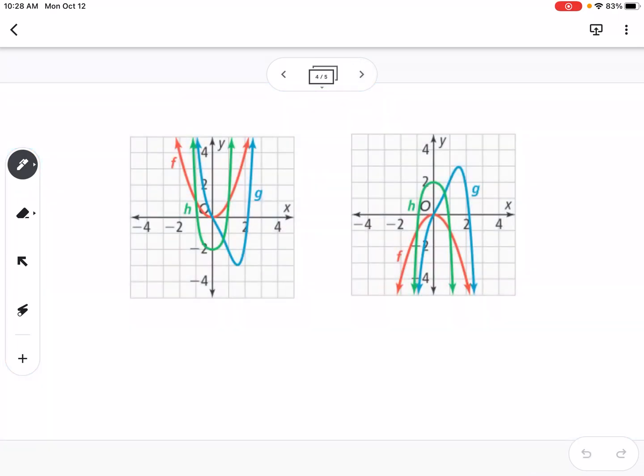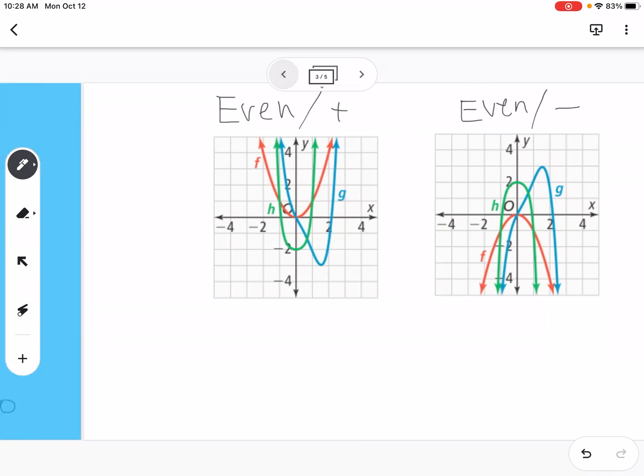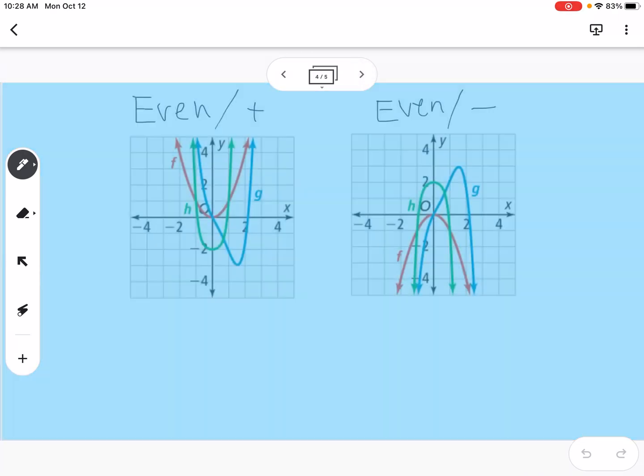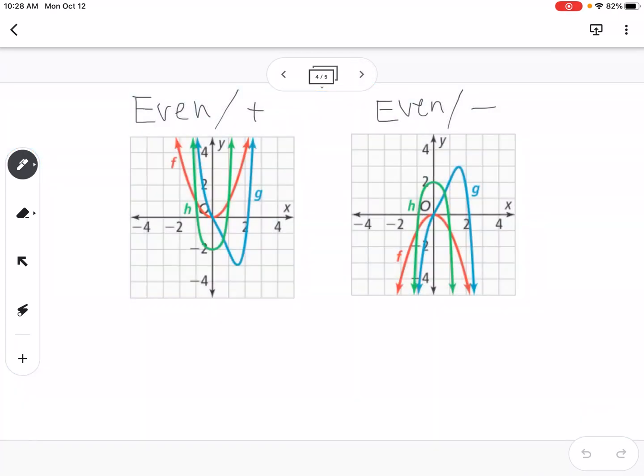The last two are even. So this is even and positive, and this one is even and negative. So you can see with the odd graphs, you have one end that's going up and one end that's going down, where with the even graphs, both ends are going the same direction. So again, we're going to have as we go to the left and as we go to the right, and we're going to have as we go to the left and as we go to the right.